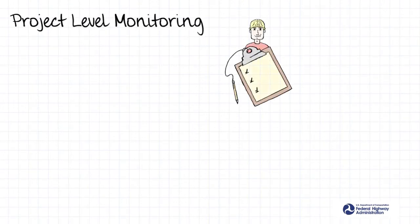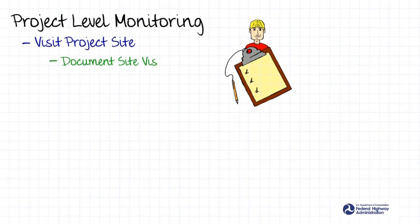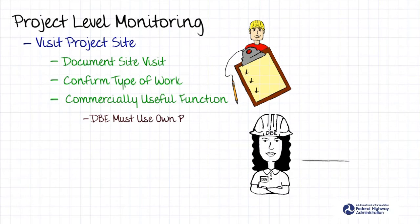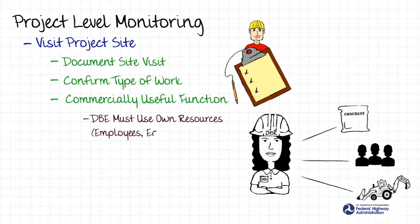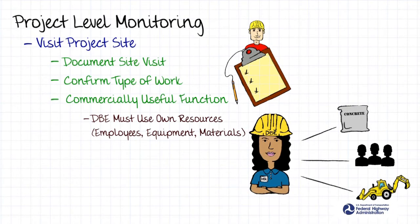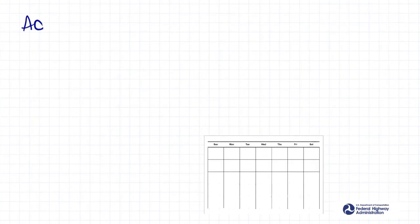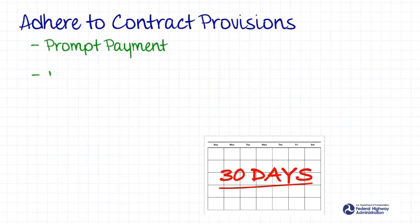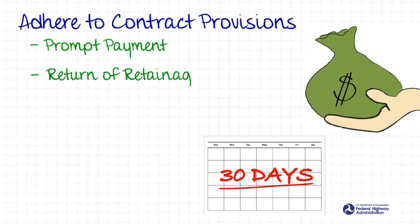This means you're expected to visit the project site and to confirm and document that the listed DBEs are performing the type of work specified in the contract and performing a commercially useful function — meaning the DBEs are using their own resources, including employees, equipment, materials, etc. You must also get confirmation from the DBE that the prime contractor is adhering to the specific contract provisions for the DBE program, such as prompt payment and return of retainage, if applicable.